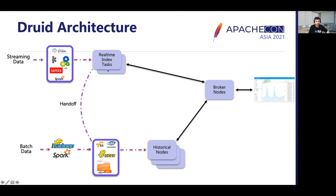The next component is historical nodes. Historical nodes are the main workhorses of the Druid cluster. They use memory-mapped files to load immutable data segments and respond to user queries. The segments are immutable and read-optimized, so historical nodes are able to serve many queries very fast and efficiently.